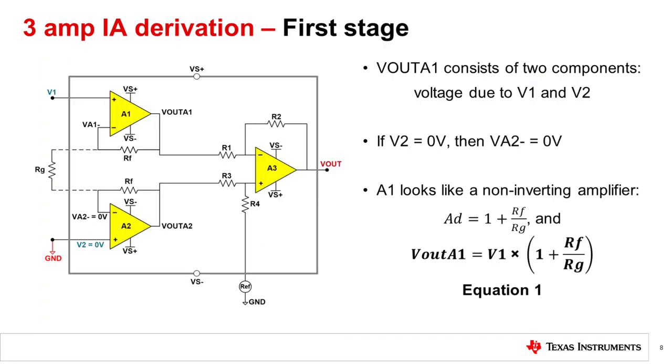The voltage seen at Vout A1 consists of two components, the voltage due to V1 and the voltage due to V2. If V2 is set to ground, then the open-loop gain of the amplifier forces its differential voltage to zero, so its inverting input, VA2- must also be ground. Amplifier A1 will now act as a non-inverting amplifier with a gain of 1 plus RF over RG. Vout A1 now becomes V1 times 1 plus RF over RG. We will name this equation equation 1.